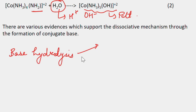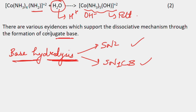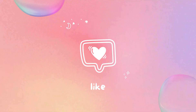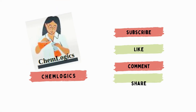Base hydrolysis proceeds mainly through two mechanisms: SN2 and SN1CB. These are experimentally observed, and for the conjugate base mechanism there is also supporting evidence. These two are our mechanisms for base hydrolysis. Thank you for watching the video. If you have any query, you can comment in the comment box. Do like, share, and subscribe to my channel, and share this video with your friends. Thank you for watching.